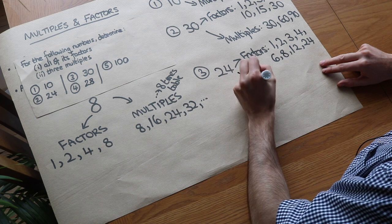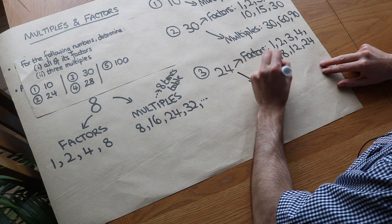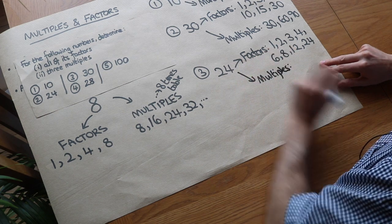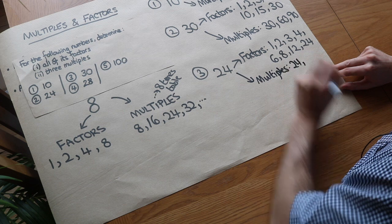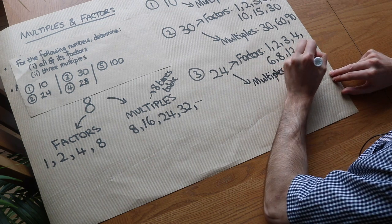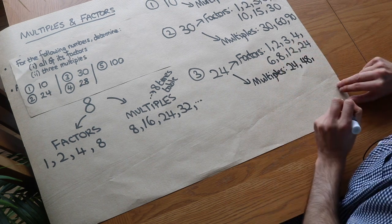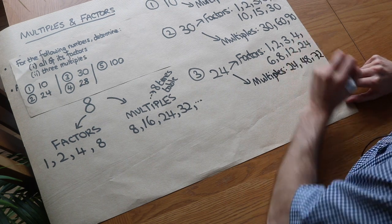And for multiples of 24, we just need the 24 times table: 1 times 24 is 24, 2 times 24 is 48, 3 times 24 is 72, and so on.